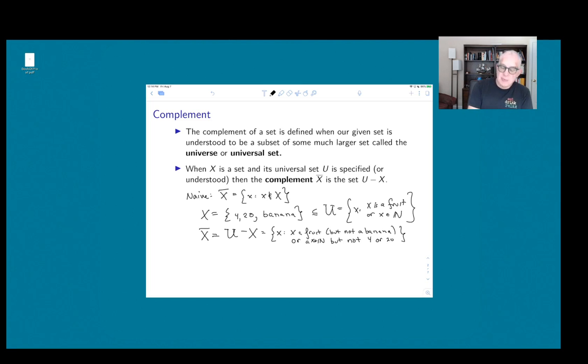And so then we end up with a notion of a complement that makes some kind of sense. So this is one of these situations where sometimes people are imprecise and they don't really specify what the universal set is. So they might, for instance, say